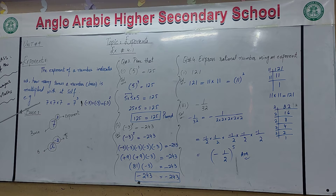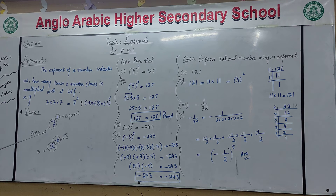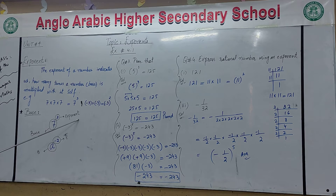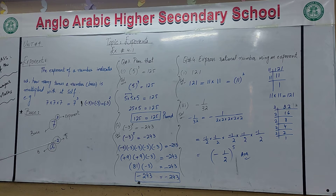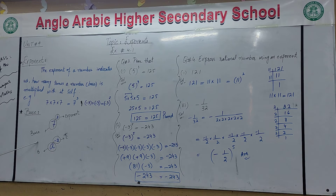What is base? When we write any number in the form with a power, which is the exponent, the number which is being multiplied is called the base. So seven is called the base and three is called the exponent. Similarly, in the next example, you have 'a' to the power minus two — so the exponent is minus two and 'a' is the base.